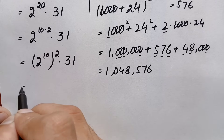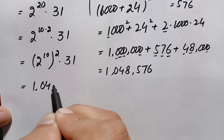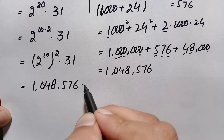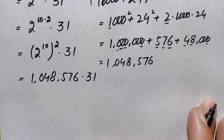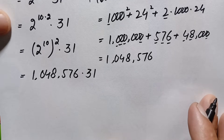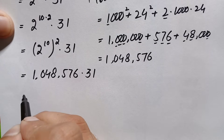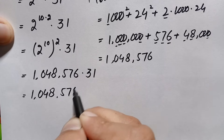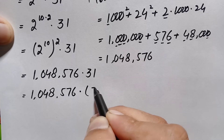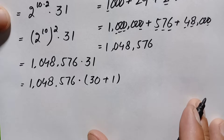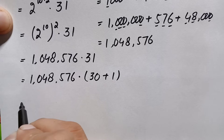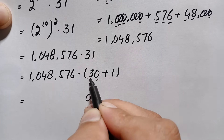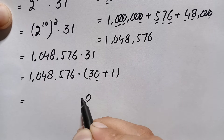We replace 2 raised to power 20 with 1,048,576, so the expression becomes 1,048,576 times 31. To multiply these without a calculator, we write 31 as the sum of 30 plus 1, and multiply 1,048,576 separately by 30 and by 1.